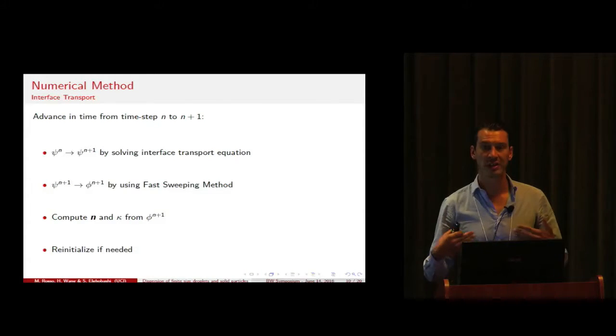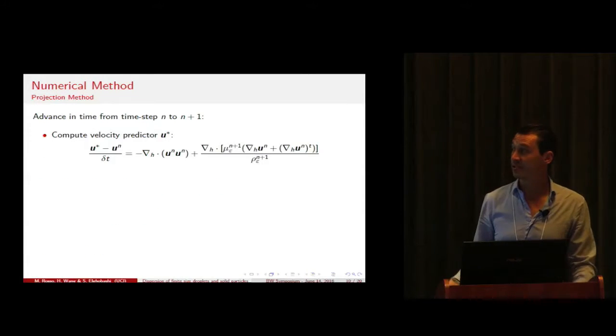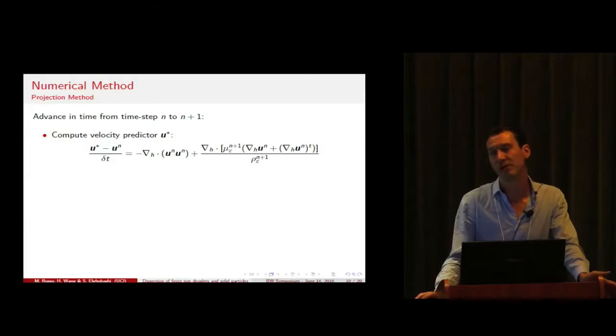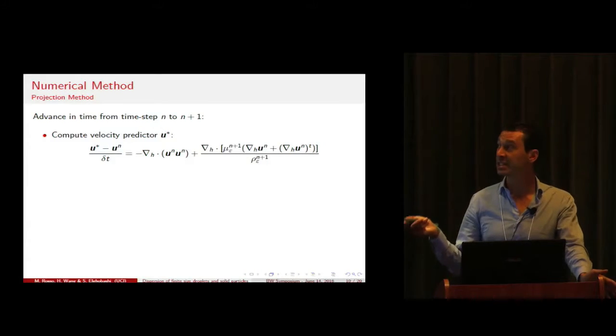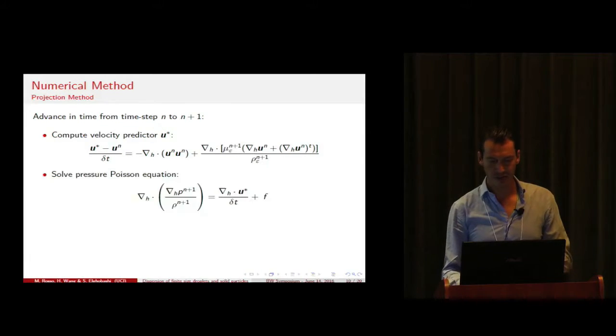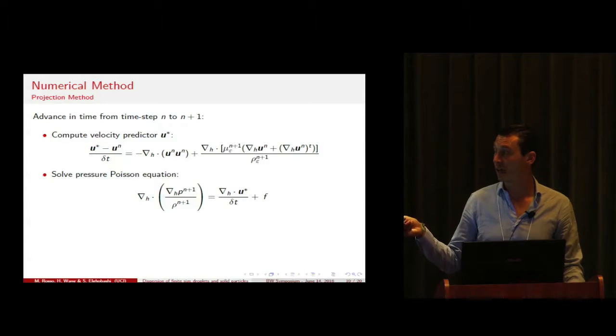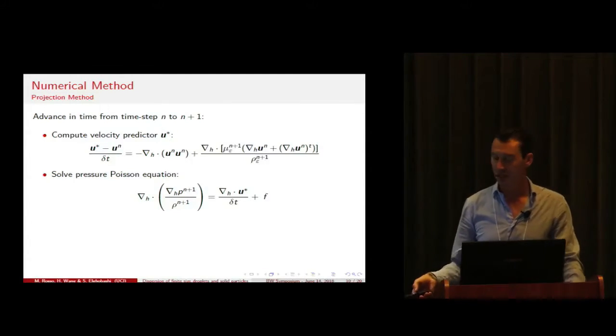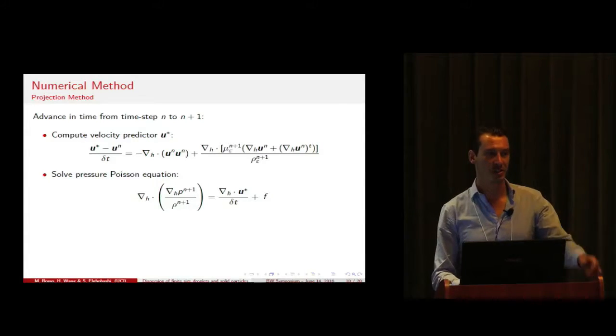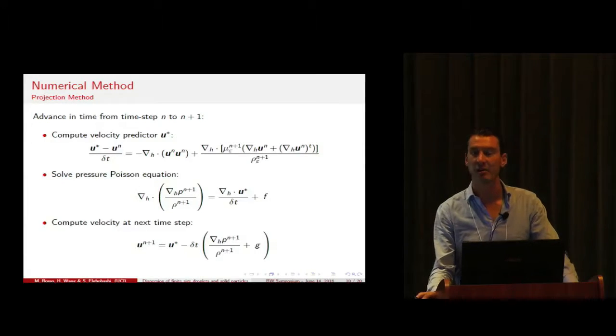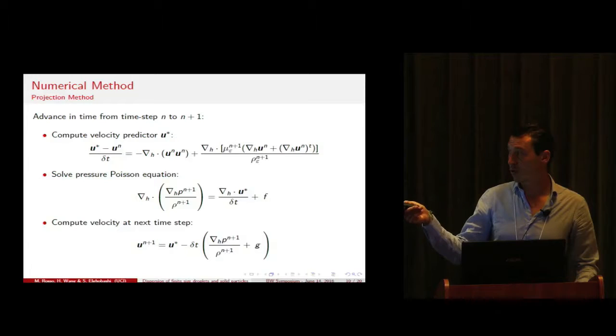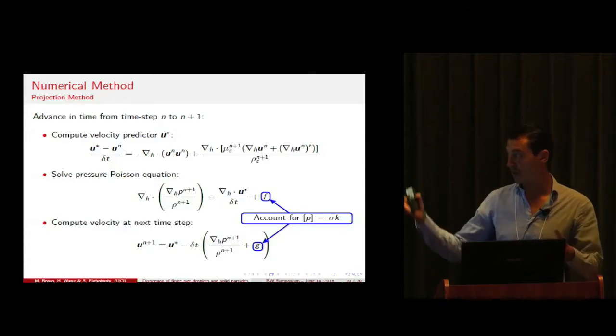After we have the interface at the next position and we have normals and curvature at the next time, we are ready to solve the Navier-Stokes equation by using a projection method. We first compute a velocity predictor by ignoring the pressure term and any body forces in the Navier-Stokes. Then with this velocity predictor we build a right-hand side for a variable coefficient pressure Poisson equation. We solve this equation to obtain the pressure at the next time level and use this pressure to correct u-star and obtain the velocity at the next time level.